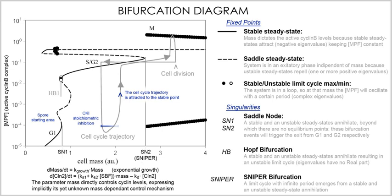Ecology and evolutionary biology have traditionally been the dominant fields of mathematical biology. Evolutionary biology has been the subject of extensive mathematical theorizing. The traditional approach in this area, which includes complications from genetics, is population genetics. Most population geneticists consider the appearance of new alleles by mutation, the appearance of new genotypes by recombination, and changes in the frequencies of existing alleles and genotypes at a small number of gene loci. When infinitesimal effects at a large number of gene loci are considered, together with the assumption of linkage equilibrium or quasi-linkage equilibrium, one derives quantitative genetics.